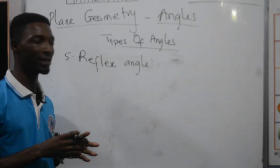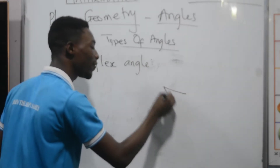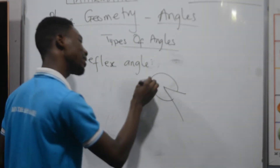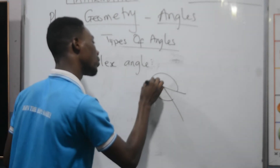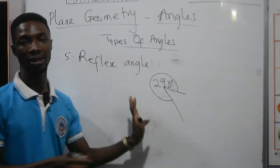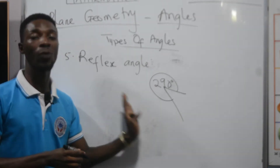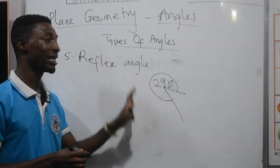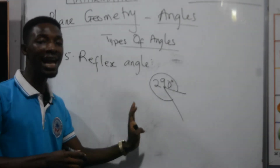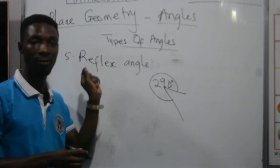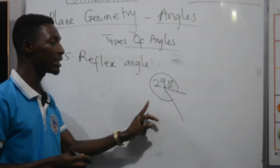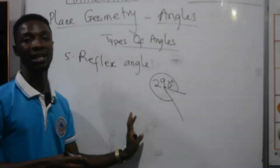A reflex angle is any angle whose measure is greater than 180 degrees but less than 360 degrees. For example, an angle of about 290 degrees is greater than 180 but less than 360 degrees. Any angle that is greater than 180 but less than 360 degrees is called a reflex angle.